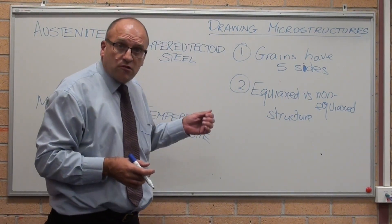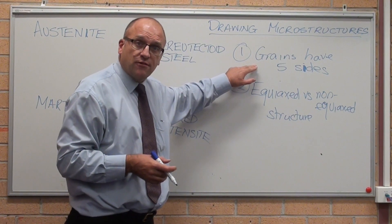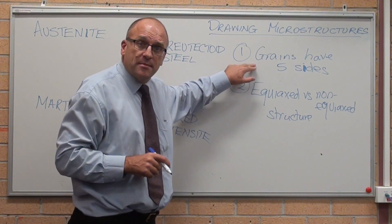Just a quick comment on drawing microstructures. First thing, grains are not circular. Grains have got five sides, approximately. Draw them as such.